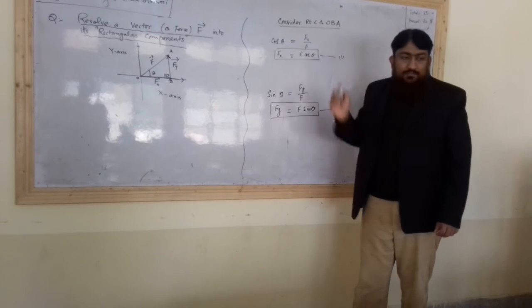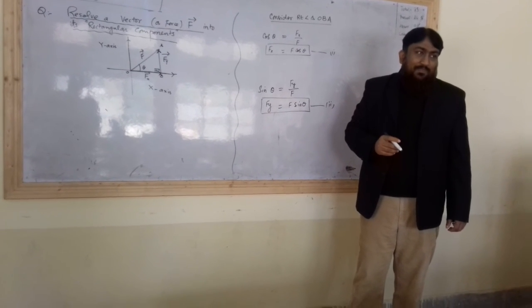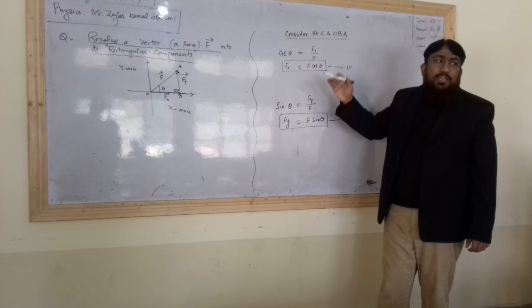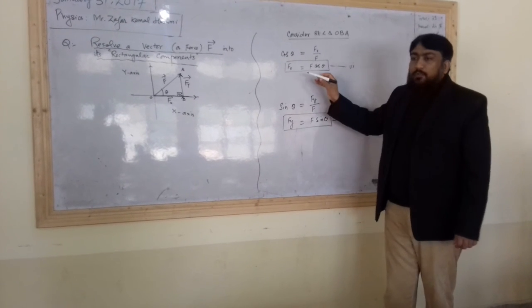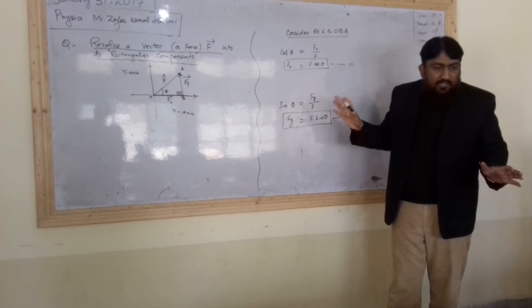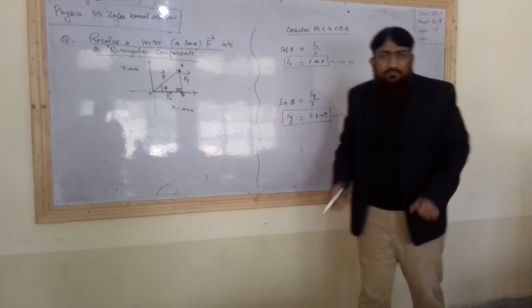Why don't we put arrows here? Because we are going to calculate magnitude. When we calculate magnitude, we do not put arrows. Is that clear? Yes. Thank you very much.